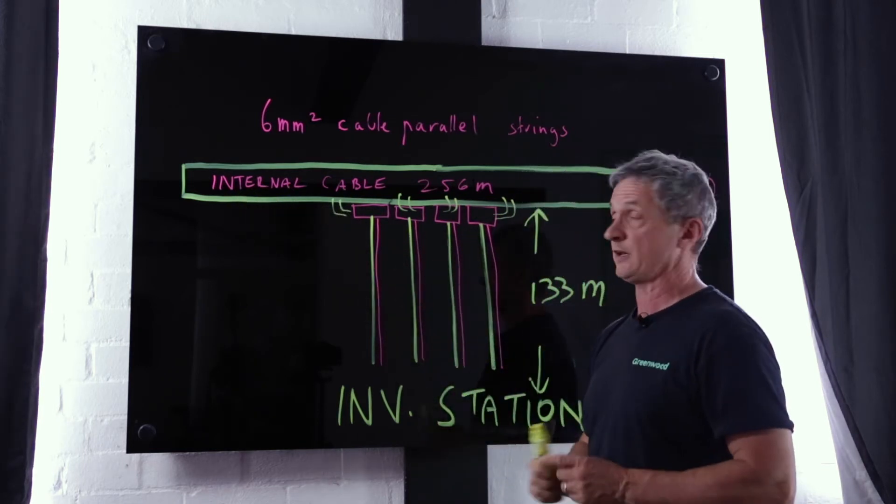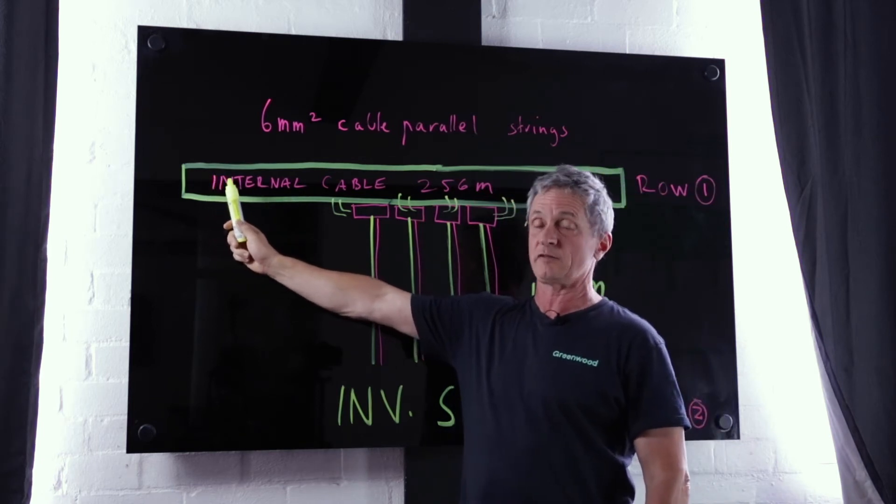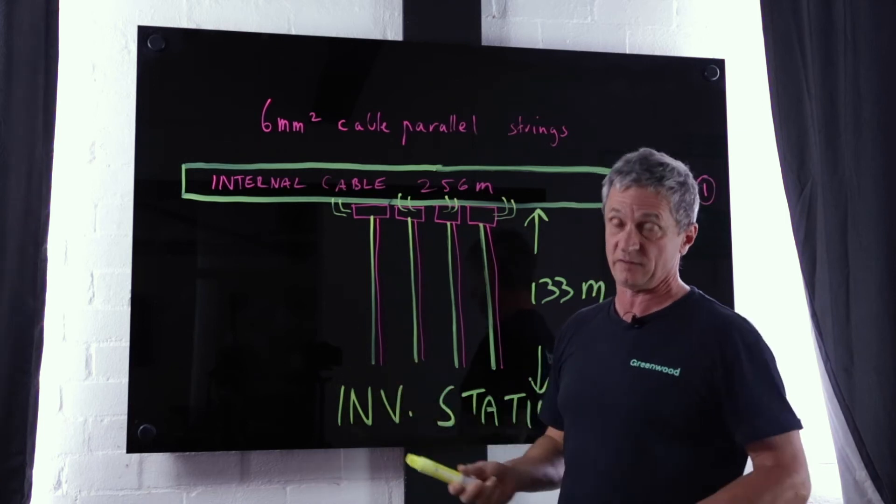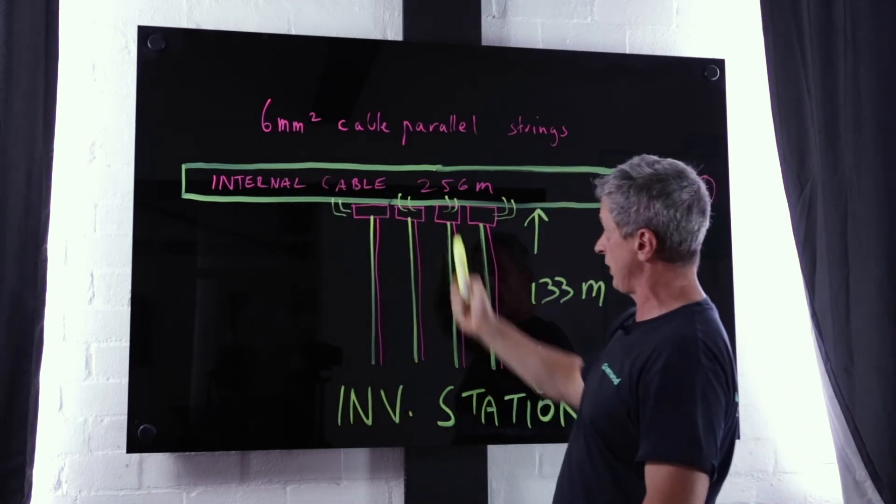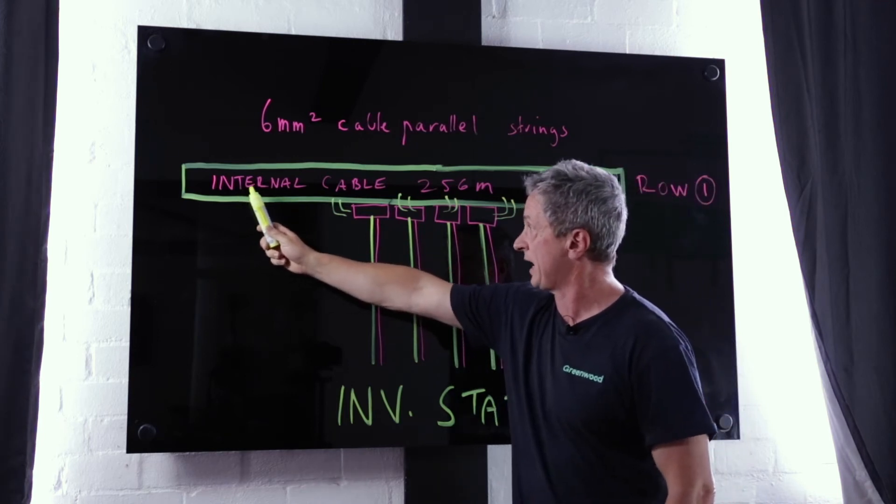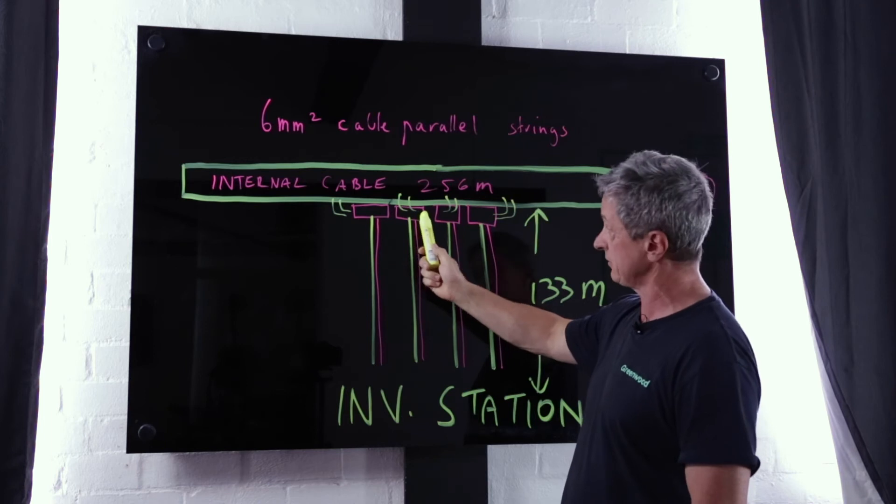But in this case we are stopping here and doing a connection at the DC isolator. So we have to do two calculations. We have to do the volt drop here and the internal volt drop here.